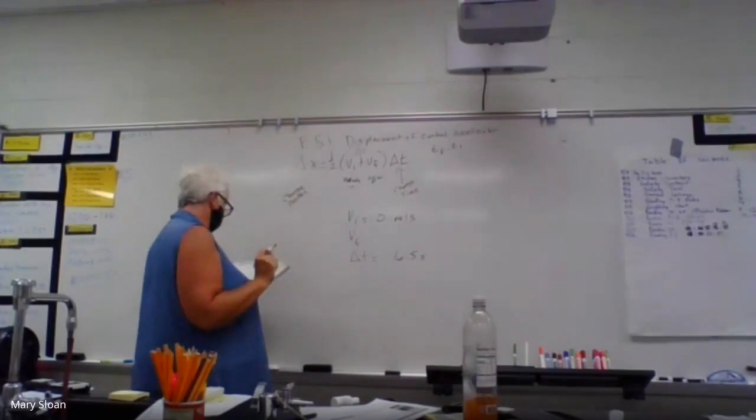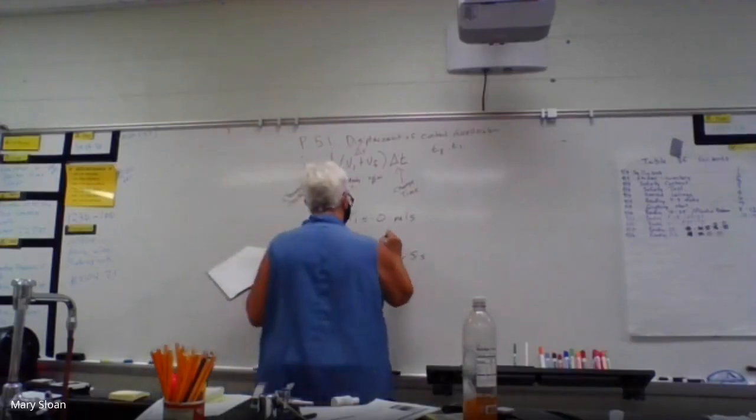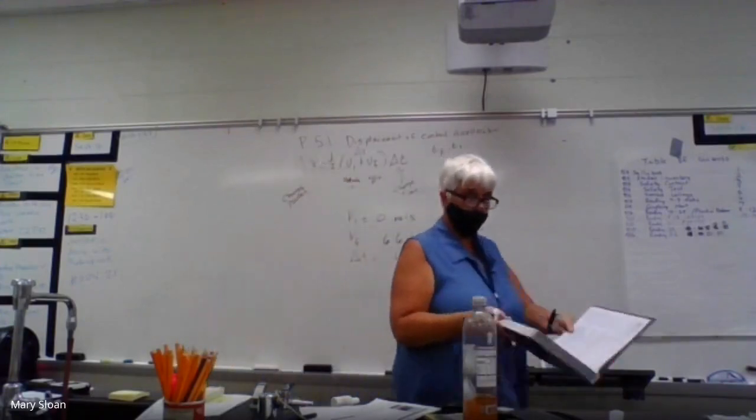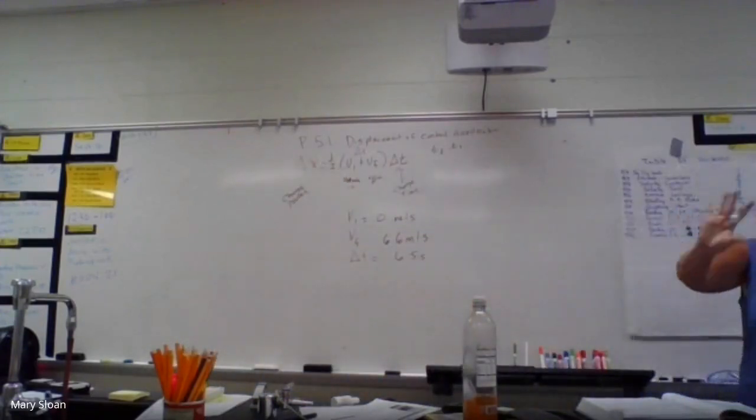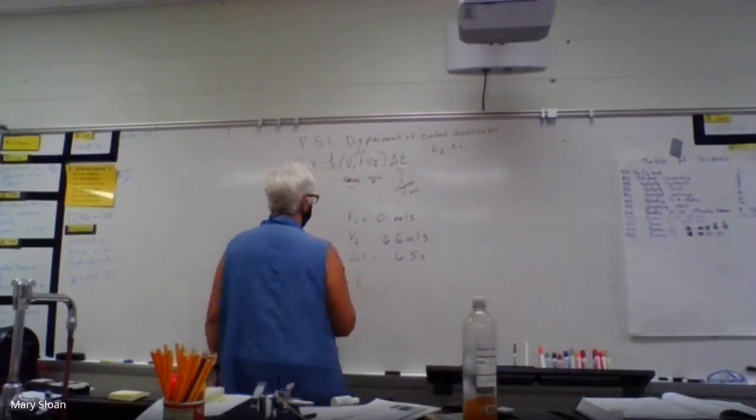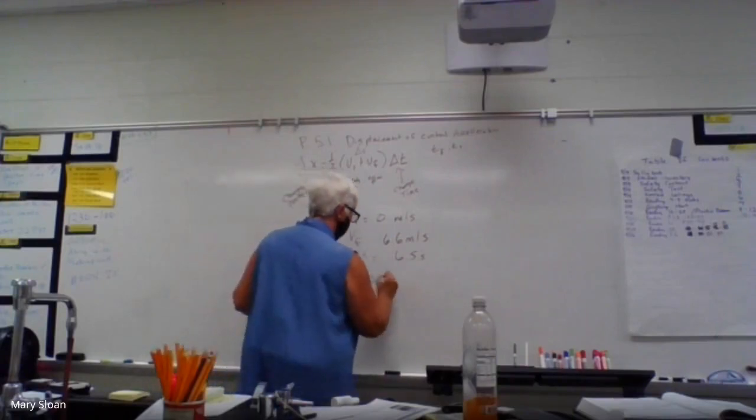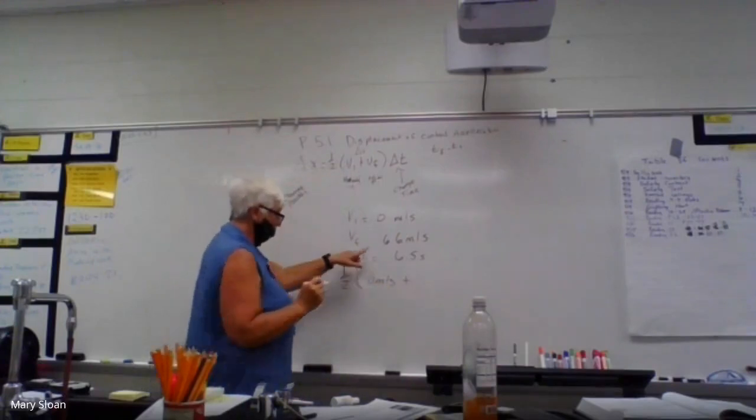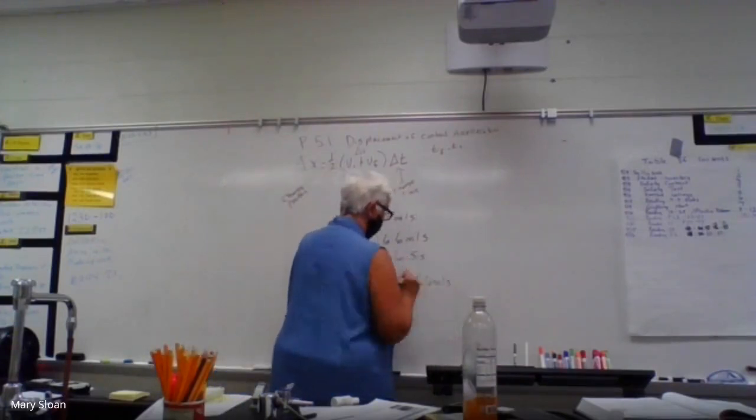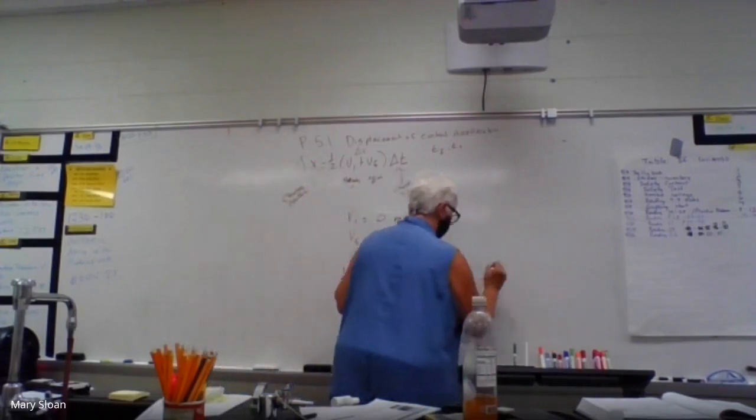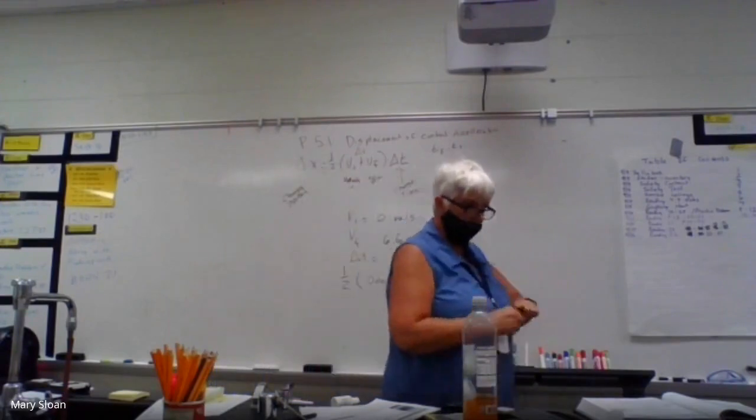Are we all good? Now put it in the equation. One half times velocity initial zero meters per second, add velocity final 6.6 meters per second, close bracket, and multiply by 6.5. Let's put it in the calculator and see what we get.